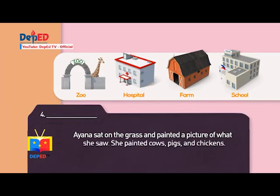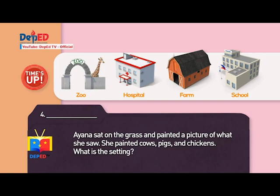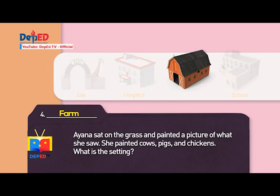Number four: Ayana sat on the grass and painted a picture of what she saw. She painted cows, pigs, and chickens. What is the setting? Clues: A zoo. A hospital. A farm. A school. Answer: A farm.